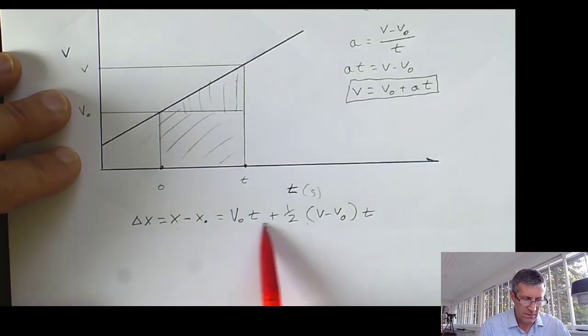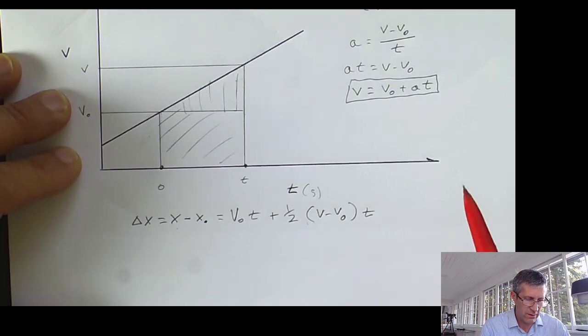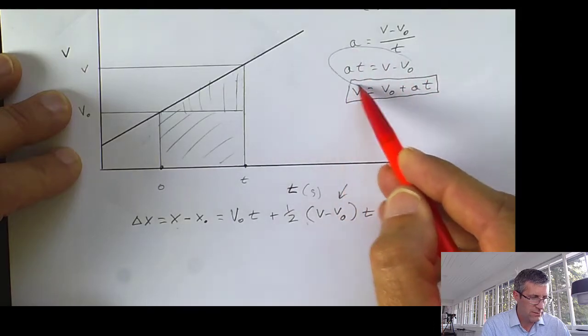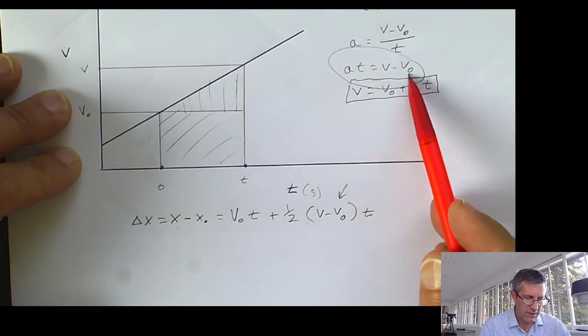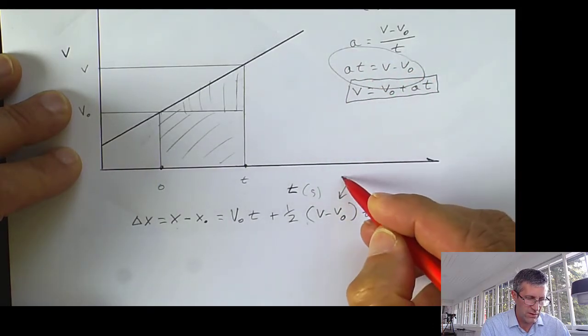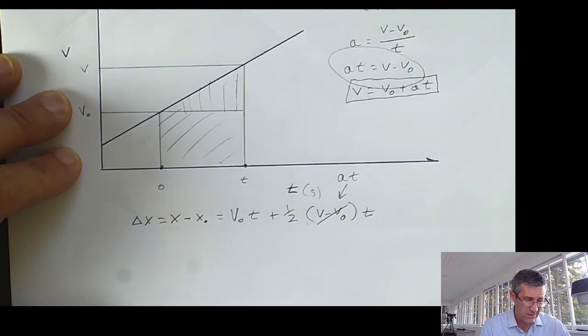So this is a not-so-pretty equation, but I can take advantage of this equation. Notice V minus V₀, that is also equal to acceleration times time. So I can replace this with acceleration times time.